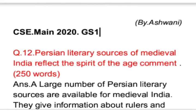This is question number 12 from the Civil Services Main Examination 2020, from GS Paper 1. The question is: 'Persian literary sources of medieval India reflect the spirit of the age — comment.'